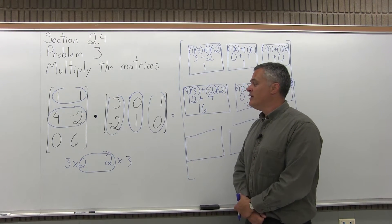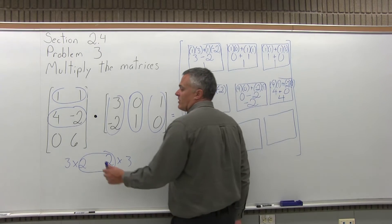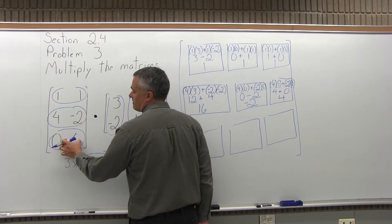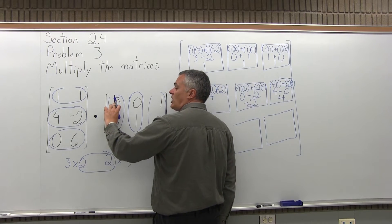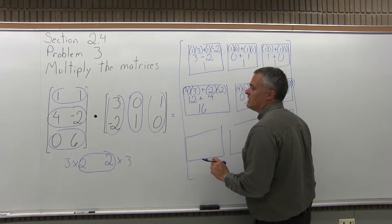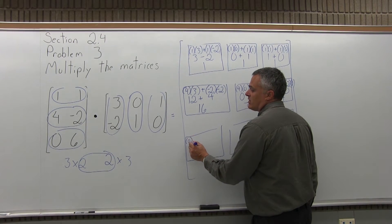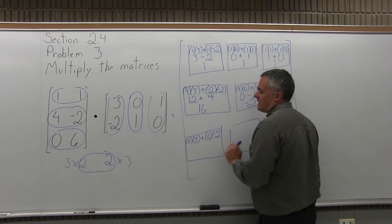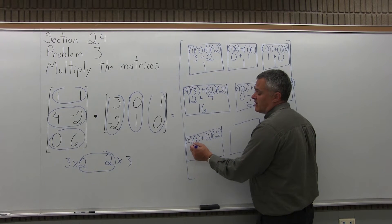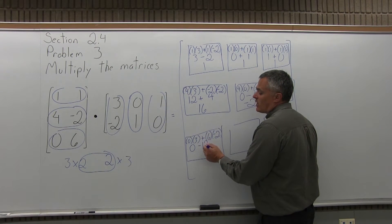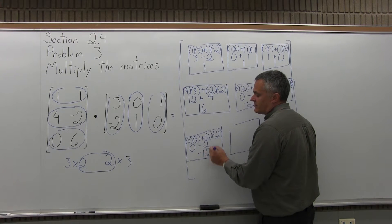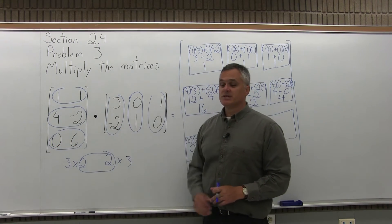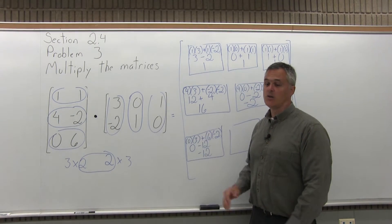To fill out the bottom row of the solution, we multiply the bottom row of the first matrix times each column in the second matrix. Starting with bottom row, 0, 6, times the first column, 3, negative 2. First times first is 0 times 3, plus second times second is 6 times negative 2. So 0 times 3 is 0, and 6 times negative 2 is minus 12. That gives 0 minus 12, which is negative 12, going in the bottom row and first column.